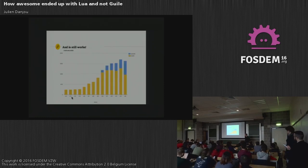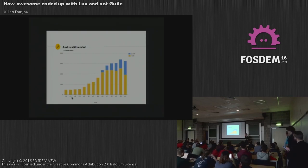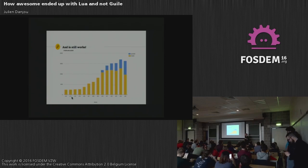It grew, and it still works today. There's still a lot of users — I have no clue how many, but I think we have like 1,000 people on the mailing list now, so probably 10 times more actual users. The C code has been reduced — that's one of the perks of embedding a language, because you can express a lot of C things in Lua. You tend to reduce your C code size because it's simpler to write things in Lua. The more time passes, the more you push things to your embedded language.